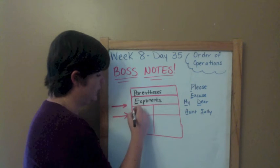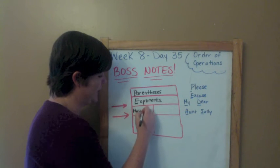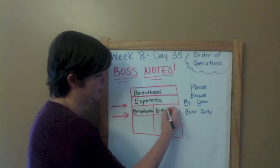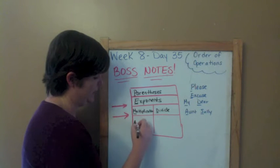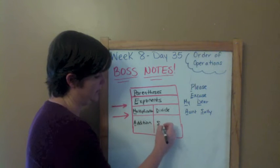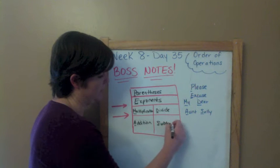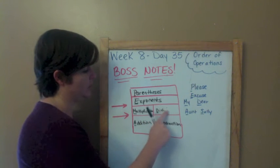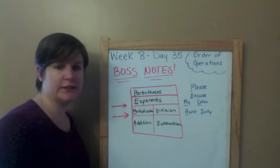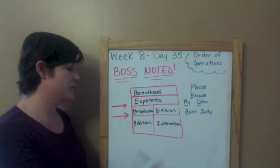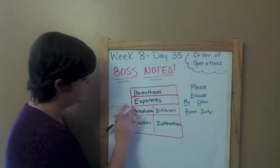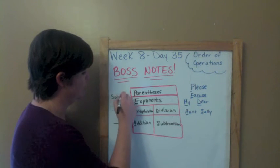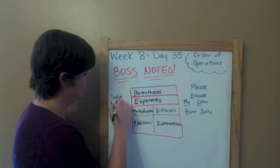Moving on — M stands for multiplication, D is division, A is addition, and S is subtraction. Again: please excuse my dear Aunt Sally — parentheses, exponents, multiplication, division, addition, subtraction. Over here you should see two arrows, and those arrows mean that you solve from left to right.